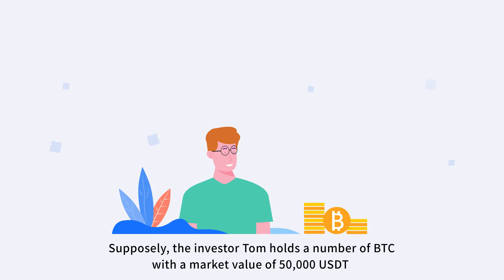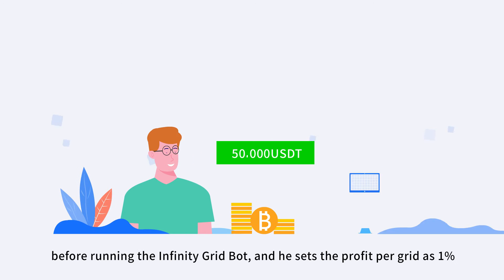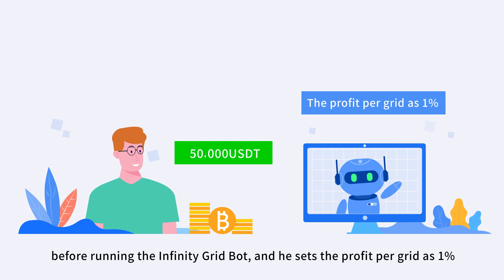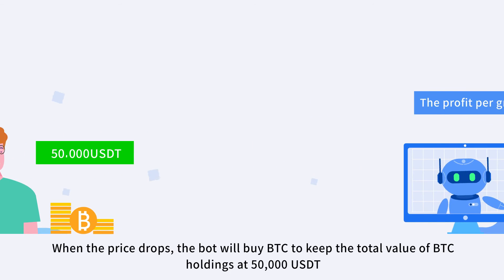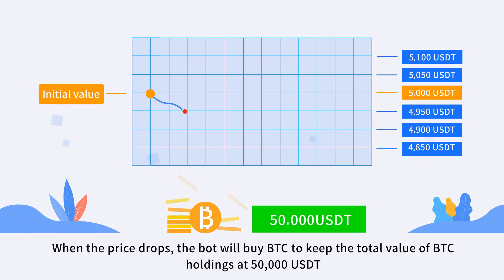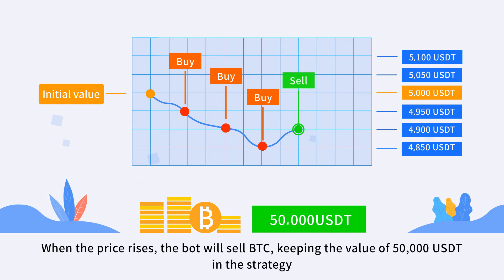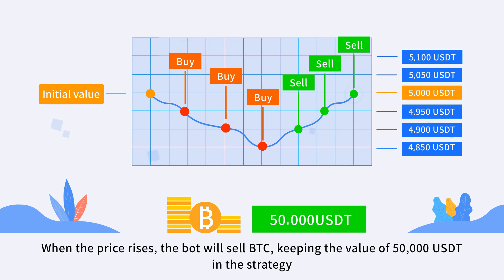Supposedly, the investor Tom holds a number of BTC with a market value of 50,000 USDT before running the Infinity Grid Bot, and he sets the profit per grid as 1%. When the price drops, the Bot will buy BTC to keep the total value of BTC holdings at 50,000 USDT. When the price rises, the Bot will sell BTC, keeping the value at 50,000 USDT in the strategy.